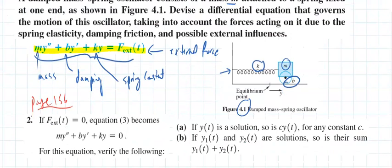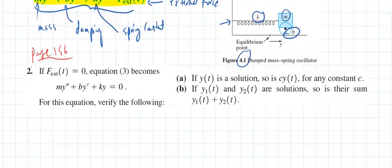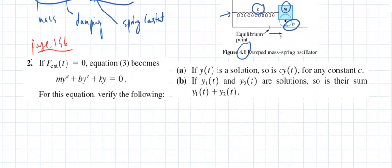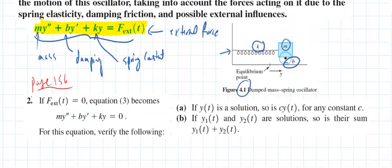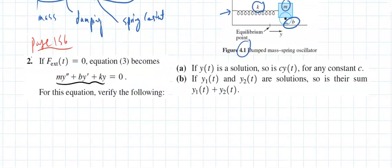In 4.9 you're going to have to do a lot of solutions yourself; here you're given the solution. Problem number two on page 156 says: if the external force equals zero, then if y is a solution, taking y times k plus y-prime times b plus y-double-prime times m gives zero. That's what that means.